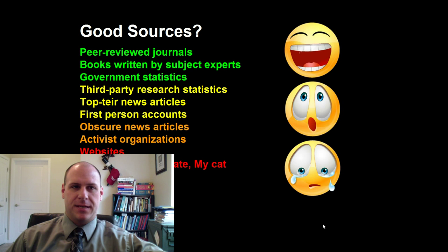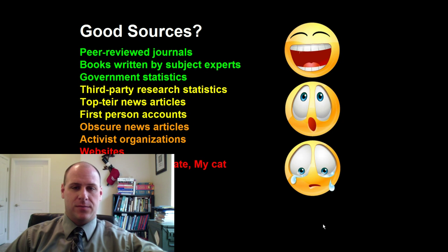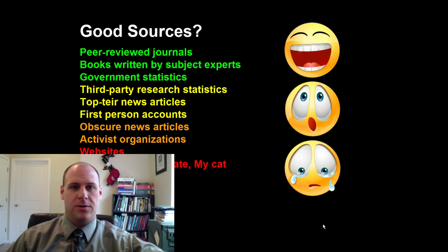At this point, we start to drift into the less okay zone. Here you start to run into obscure news sources. If it's really necessary to include one, that can be understandable. However, you should go out and search to see if you can find the same news story on a more reliable news source. If it's something hyper-specific — perhaps you're researching a local issue — then bringing a local paper in would be understandable. But always look to see if there's a top-tier news source before you use a lower-tier news source for context.